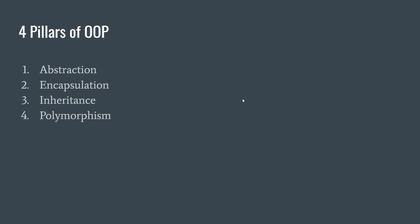Object-oriented programming has these four pillars — these are the four core concepts in object-oriented programming. Let's discuss them one by one.